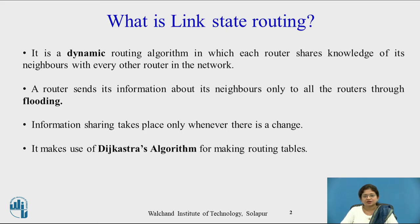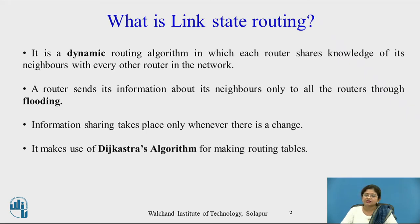Link state routing is a dynamic routing algorithm in which each router shares the knowledge of its neighbors with every other router present in the network. A router sends its information about its neighbors to all other routers through flooding. Information sharing takes place only whenever there is a change in the subnet network topology or when a new router is installed. It makes use of Dijkstra's algorithm for building the routing table.